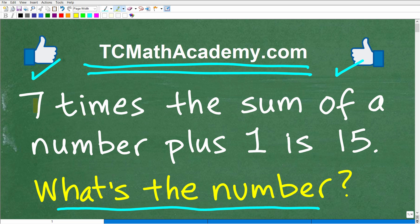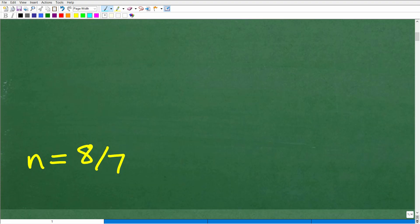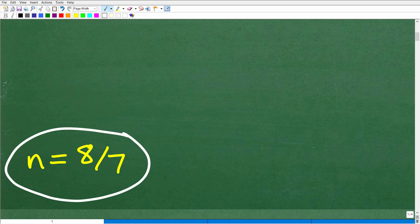Okay, so one more time here. We have 7 times the sum of a number plus 1 is 15. What's the number? Okay, so that is the question. And let's go ahead and take a look at the answer right now. The number in question is 8 sevenths.